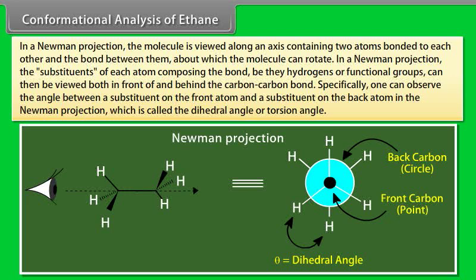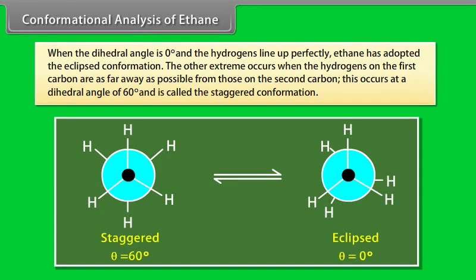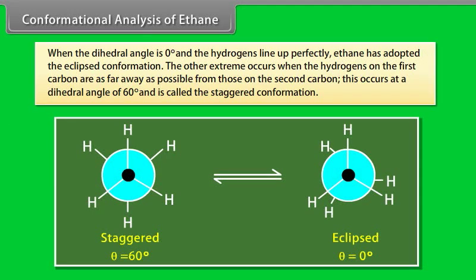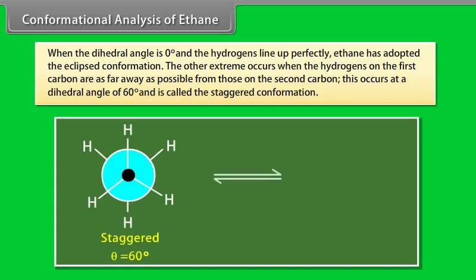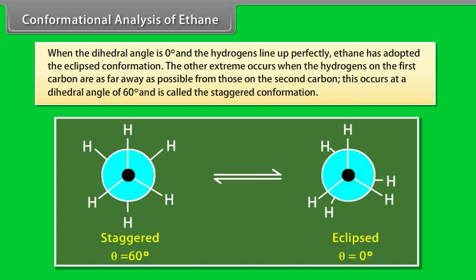In a Newman projection, the molecule is viewed along an axis containing two atoms bonded to each other and the bond between them about which the molecule can rotate. The substituents of each atom composing the bond, be they hydrogen or functional groups, can then be viewed both in front of and behind the carbon-carbon bond. Specifically, one can observe the angle between a substituent on the front atom and a substituent on the back atom in the Newman projection, which is called the dihedral angle or torsion angle.